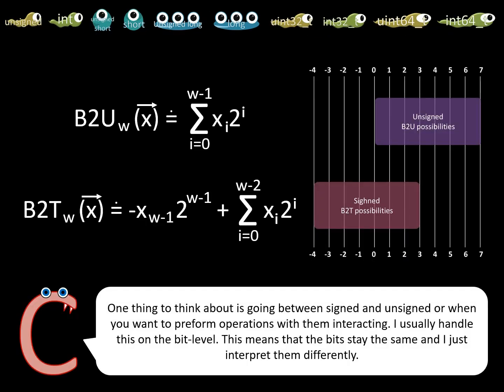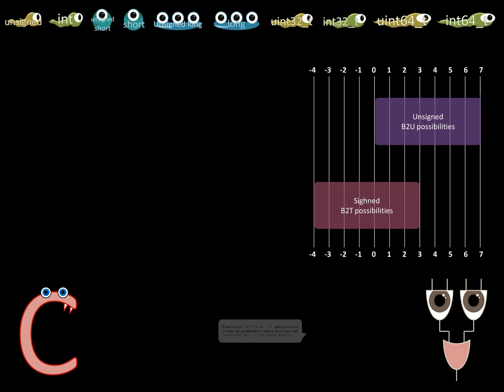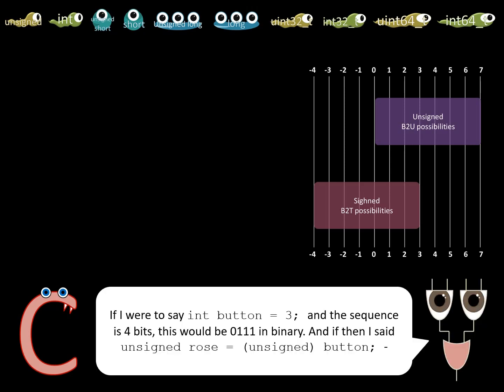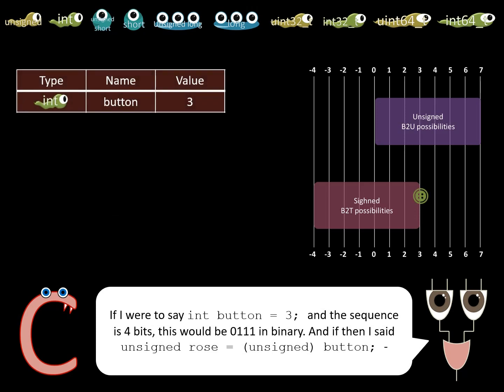One thing to think about is going between signed and unsigned, or when you want to perform operations with them interacting. I usually handle this on the bit level. This means that the bits stay the same, and I just interpret them differently. If I were to say int button = 3, and the sequence is 4 bits, this would be 0111 in binary.